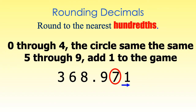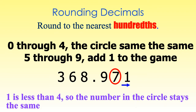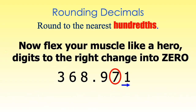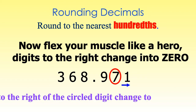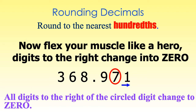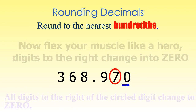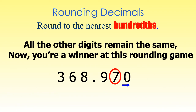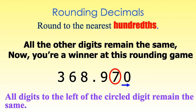The next step tells us: zero through four, the circle stays the same; five through nine, add one to the game. The digit one is less than four, so the number in the circle stays the same. Now flex your muscles like a hero — the digits to the right change into zero. The digit one is to the right of our circle, so that digit changes to zero. All the other digits remain the same. Now you're a winner at this rounding game — all digits to the left of the circled digit remain the same.